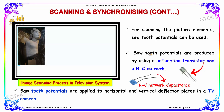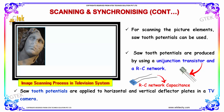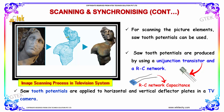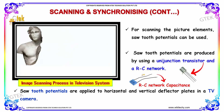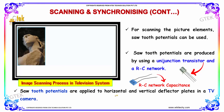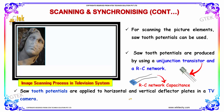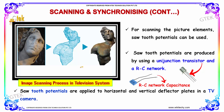For scanning the picture elements, sawtooth potentials can be used. Sawtooth potentials are produced by using a unijunction transistor and a RC network. Sawtooth potentials are applied to horizontal and vertical deflectors placed in a TV camera.